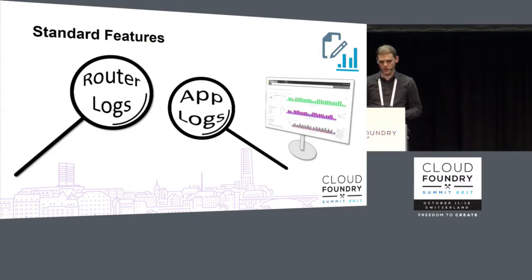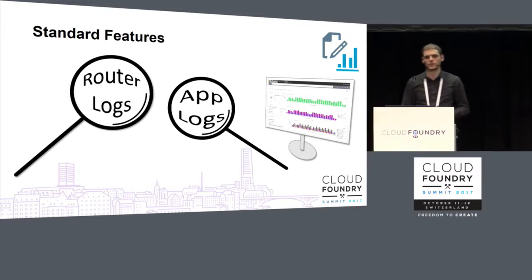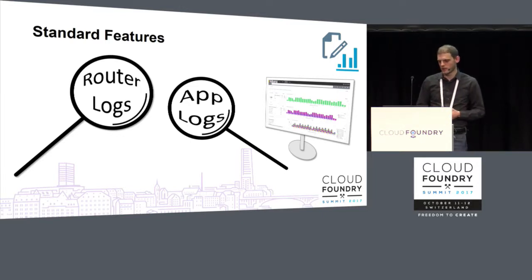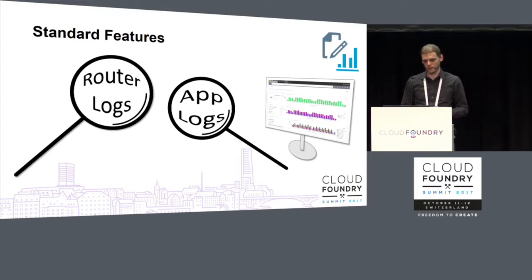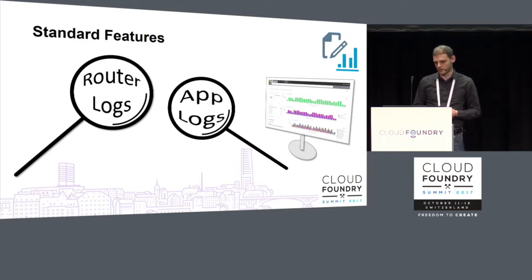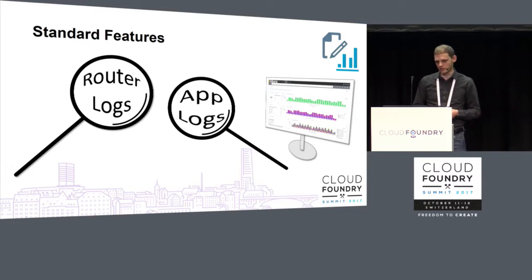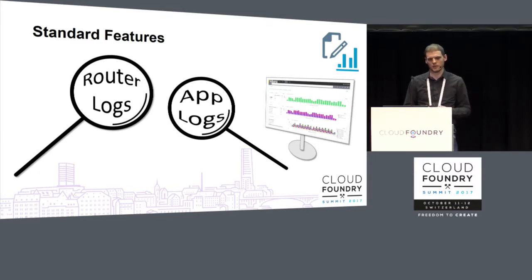So how does our service work? We basically collect router logs and application logs. Router logs already come in with a highly structured form, which allows us to retrieve useful information like response times and many others. Both log types are enriched with context information like the app name or space name, and are then written to an Elasticsearch database. We also offer Kibana dashboards that allow you to gain insights into these logs easily. You don't have to group your apps beforehand because all logs are written to the same database, so you can still decide later how to group apps for evaluation.